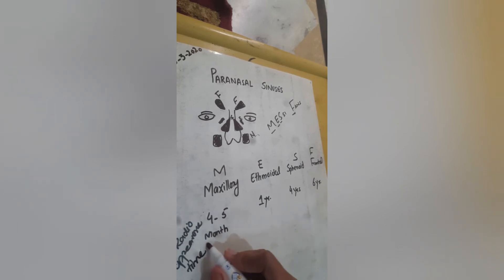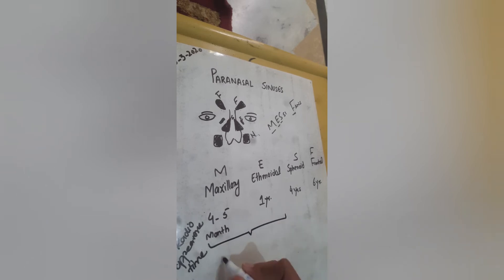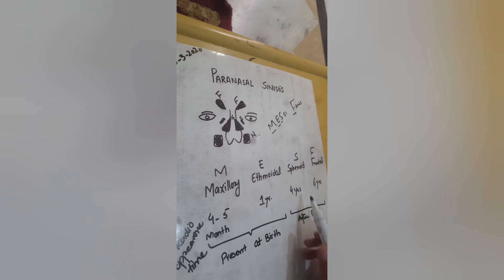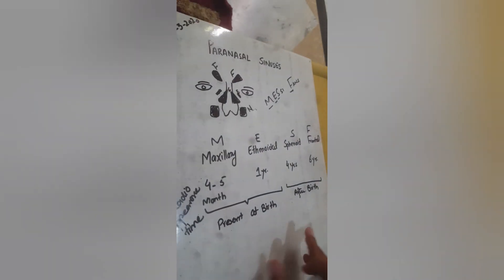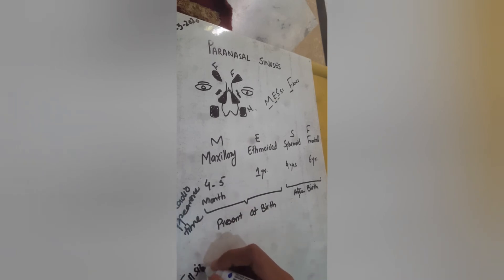Now the maxillary sinus and ethmoidal sinus, these two sinuses are present at birth. These two are the only paranasal sinuses present at birth. And these two form after birth - that's why they appear late on the x-rays.